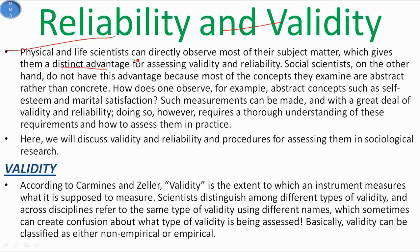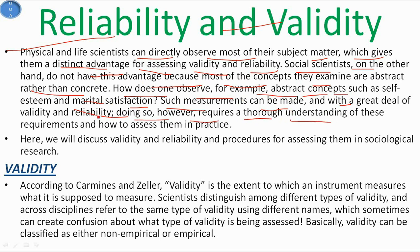The next topic is reliability and validity. Physical and life scientists can directly observe most of their subject matter, giving them a distinct advantage for assessing validity and reliability. Social scientists, however, do not have this advantage because most concepts they examine are abstract rather than concrete — such as self-esteem or marital satisfaction. Such measurements can be made with a great deal of validity and reliability, but doing so requires a thorough understanding of these requirements and how to assess them in practice.